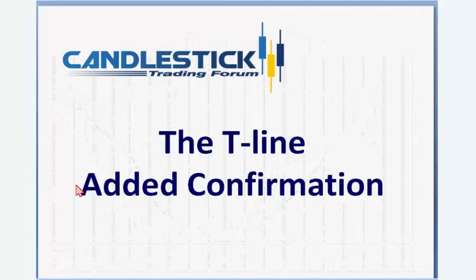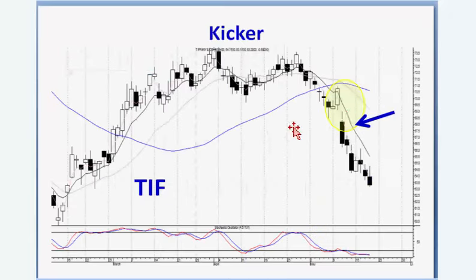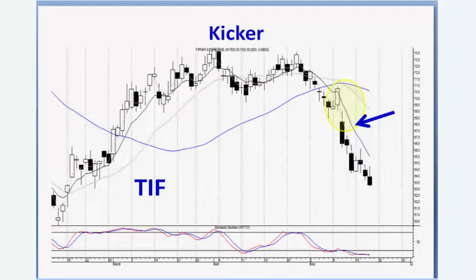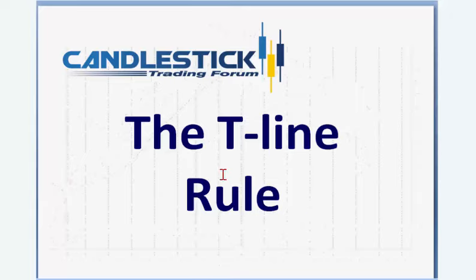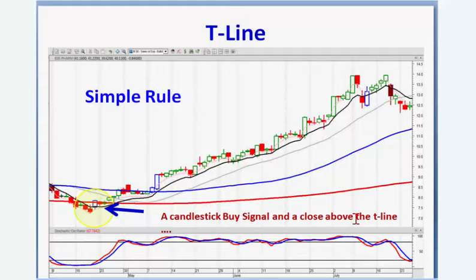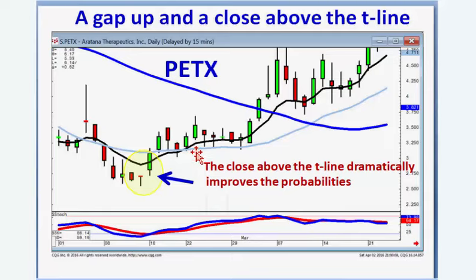Part of that support and resistance level is the T-line itself. We've been short Tiffany ever since the kicker signal right here — they haven't been able to get back up above the T-line. Gas was in a downtrend with gaps, so we knew the retailers were in a downtrend. The T-line rule is very simple: if you see a candlestick buy signal and a close above the T-line, you can stay long until you see a candlestick sell signal and a close back below the T-line.